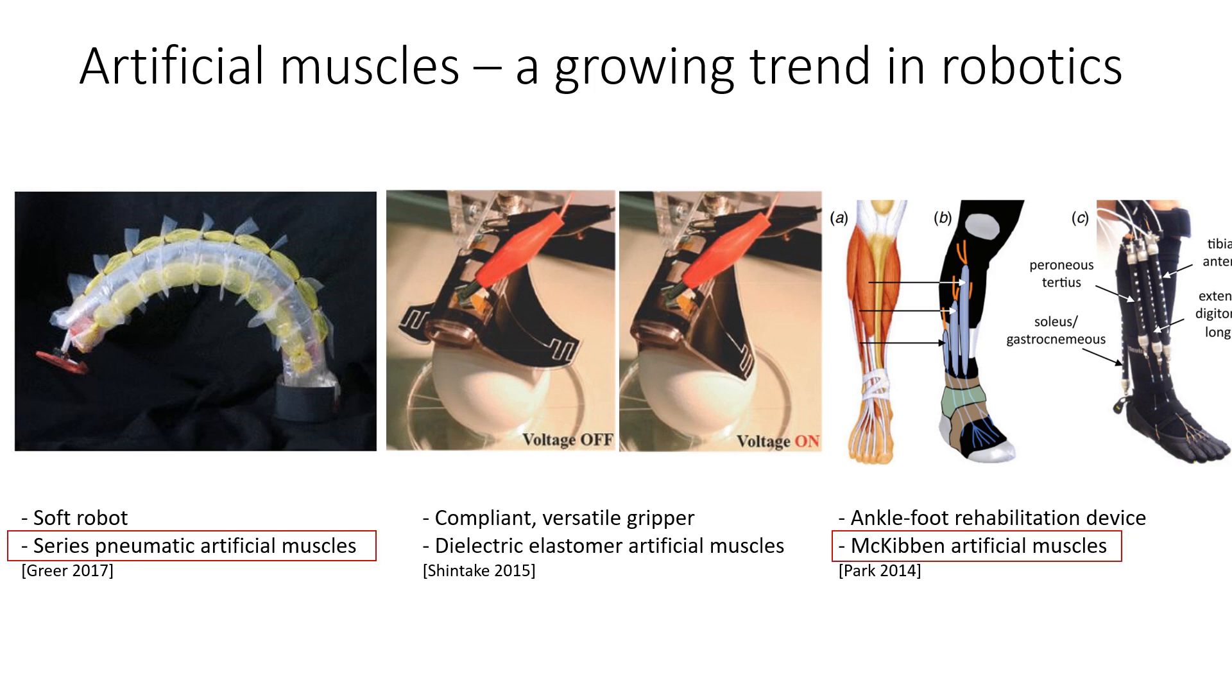Actuators like pneumatic muscles and dielectric elastomers offer capabilities like inherent compliance and high power-to-weight ratio. These biomimetic properties open many new doors for achieving safe, life-like robot motion.